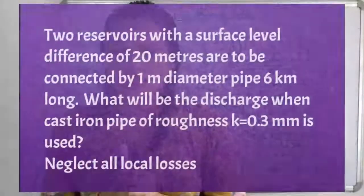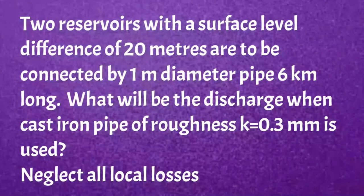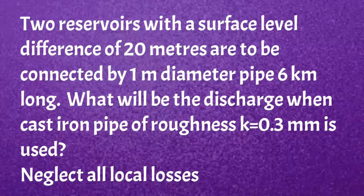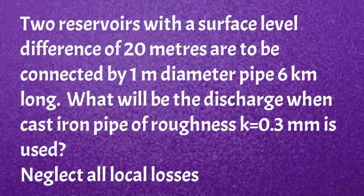Now I will read the given question. Two reservoirs with a surface level difference of 20 meters are to be connected by a 1 meter diameter pipe, 6 kilometers long. What will be the discharge when a cast iron pipe of roughness k equal to 0.3 millimeter is used? Neglect all local losses.